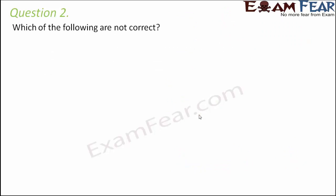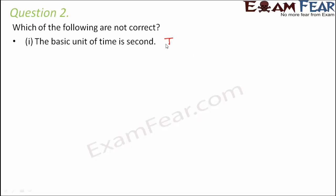Question number two: which of the following are not correct? The basic unit of time is second - that is true. Every object moves with a constant speed - this is false, because different objects have different speeds, and it is not necessary that speed remains the same. That is where the concept of non-uniform motion comes in.